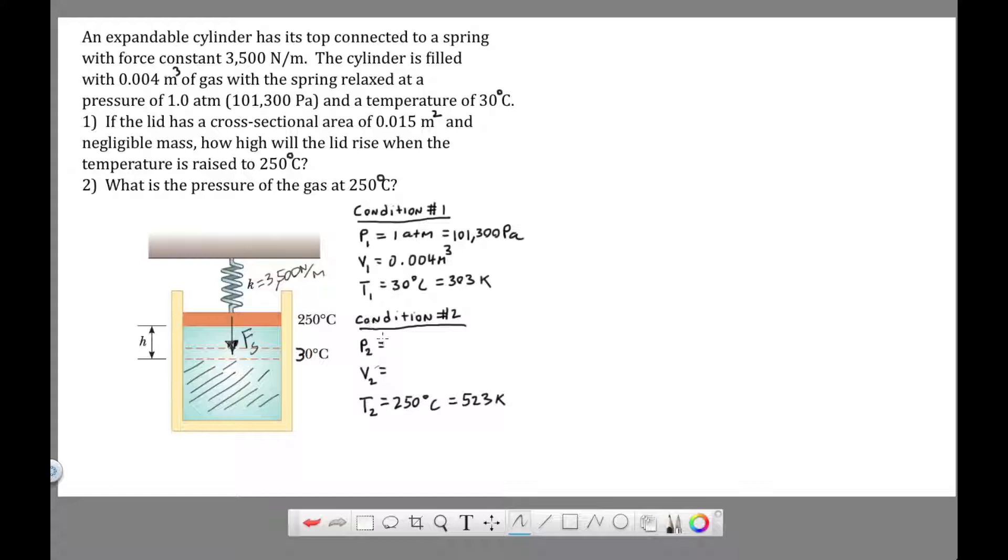For condition two, we don't know pressure two, although it's going to be greater because the spring is pushing back. We don't know the ending volume. The ending volume is going to be equal to the starting volume plus this increase in volume. And the final temperature is 250 degrees Celsius, which we put into Kelvin.